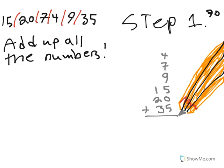Using simple addition, add up all the numbers. Just using very simple addition. So, you know that 35 plus 20 plus 15 plus 9 plus 7 plus 4 equals 90.